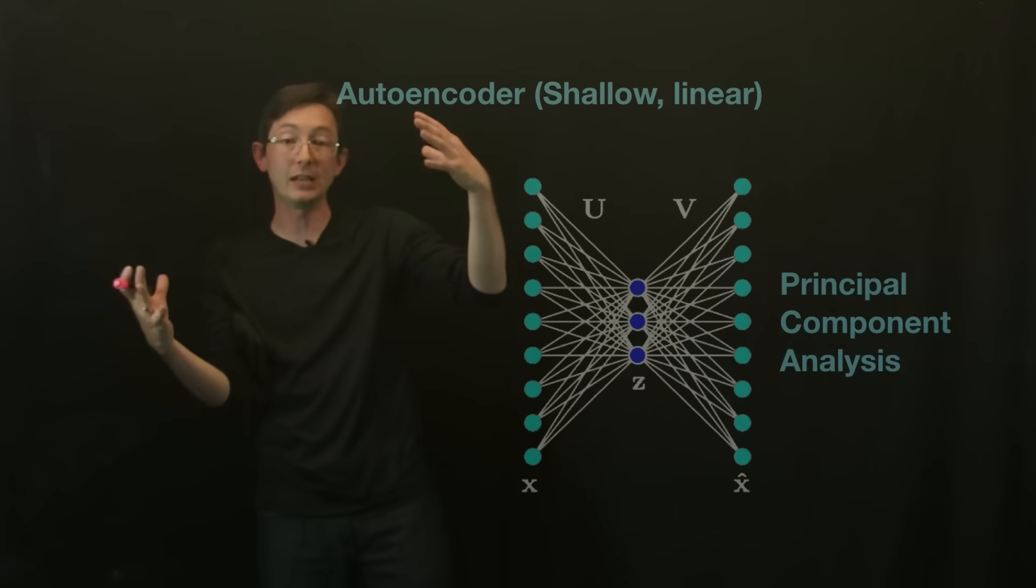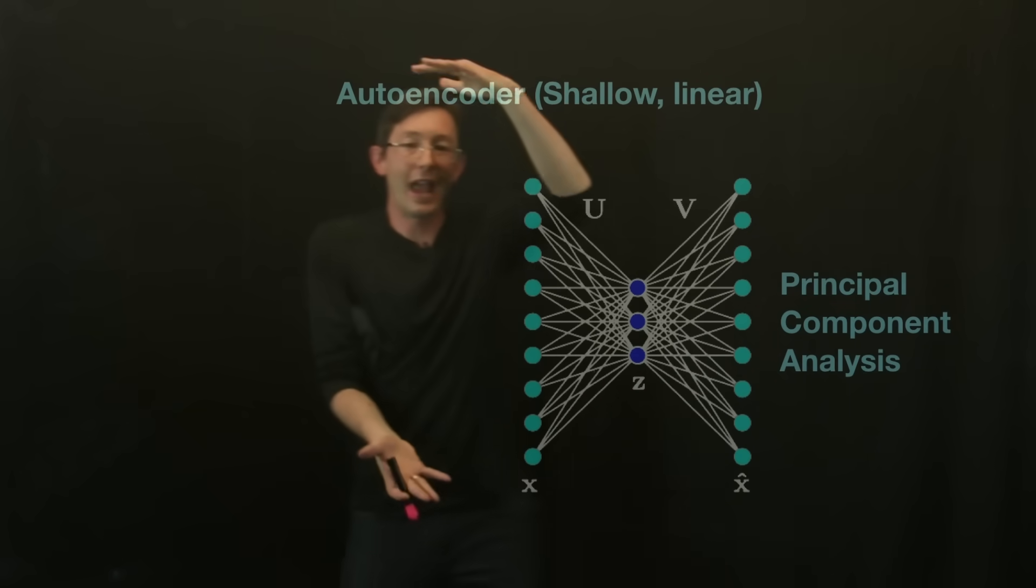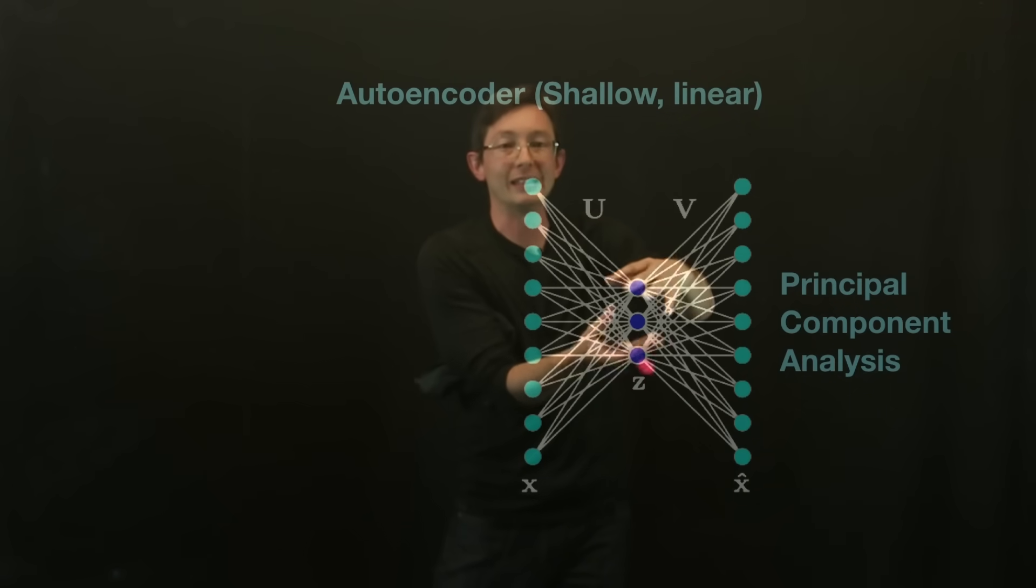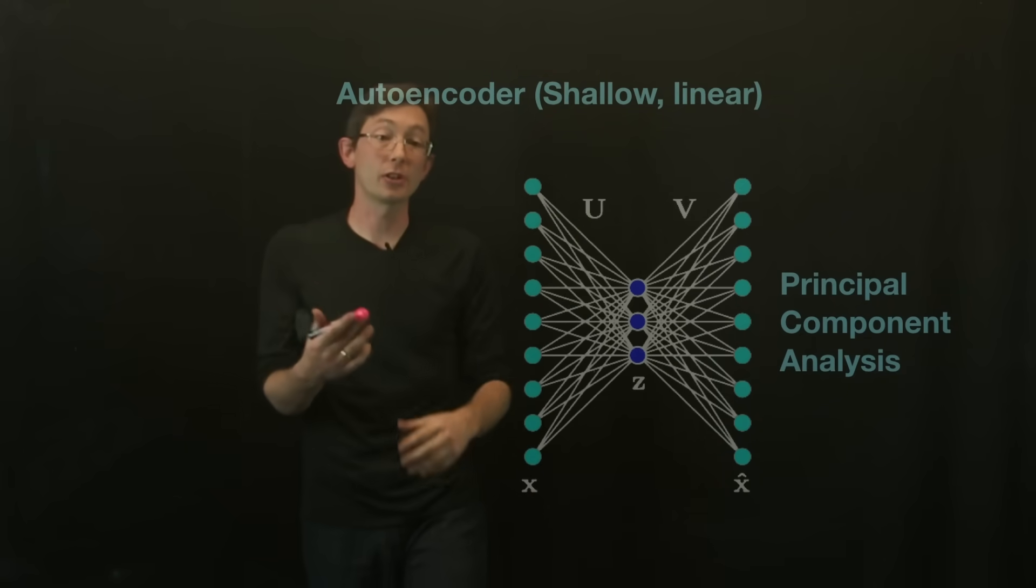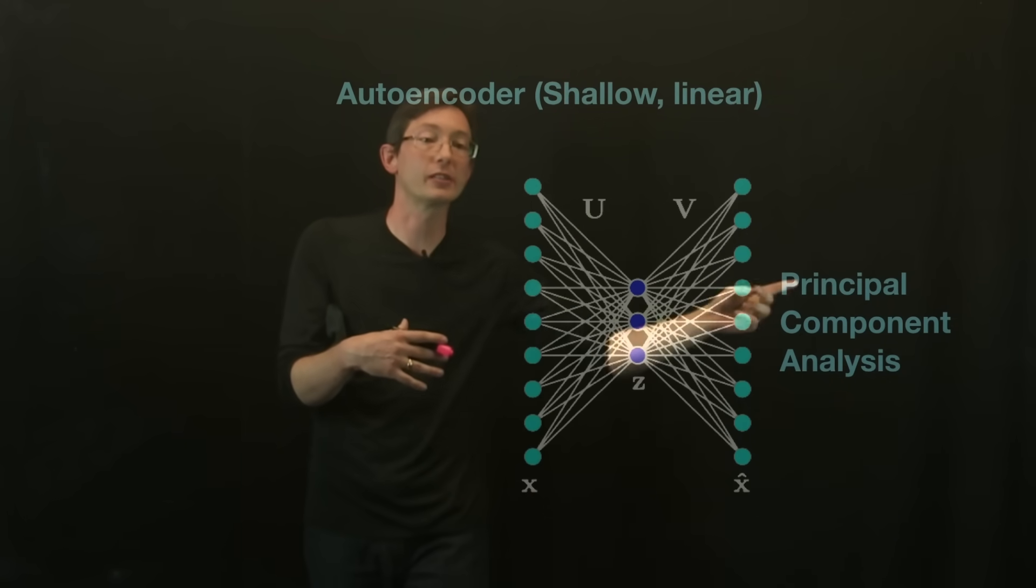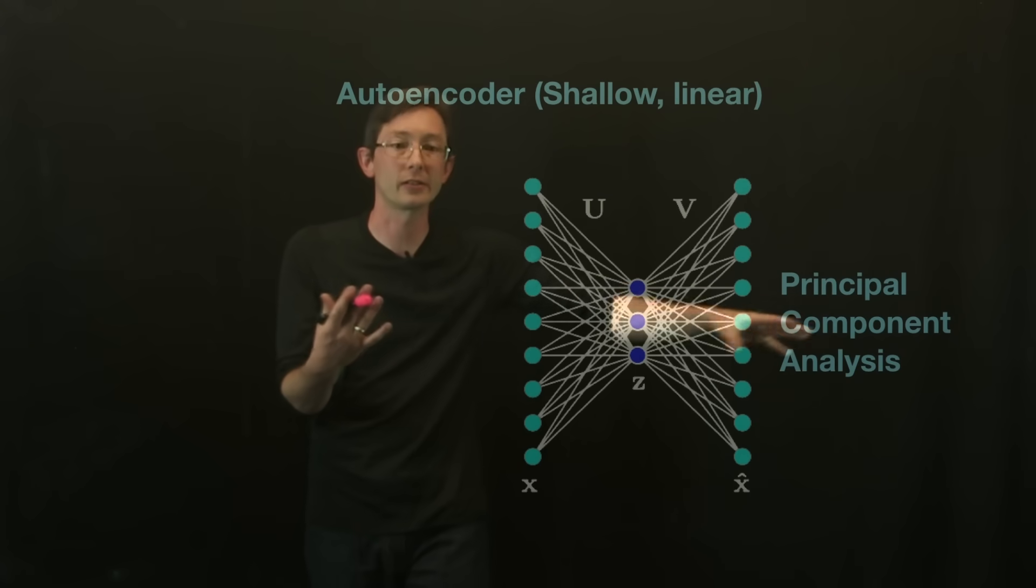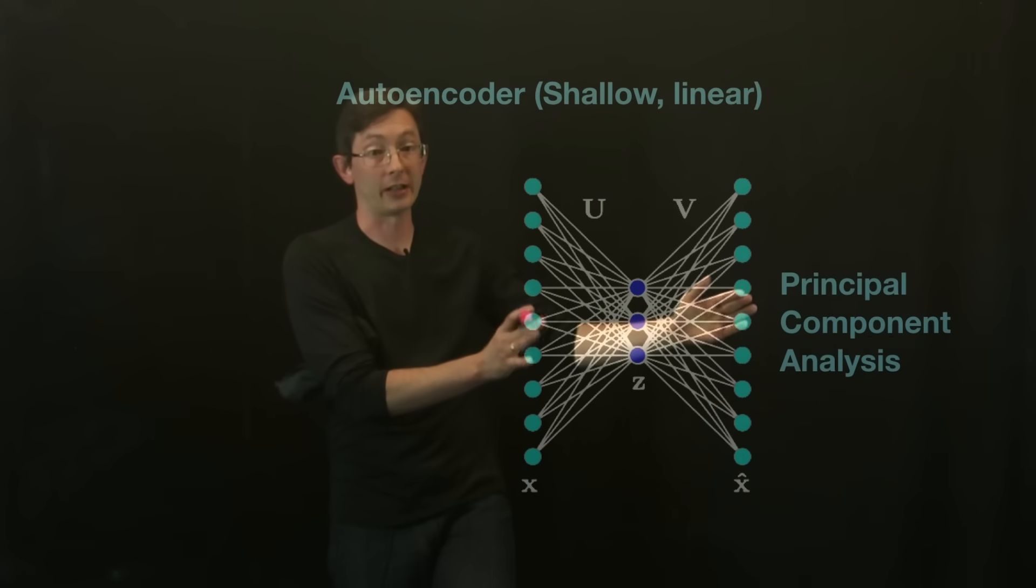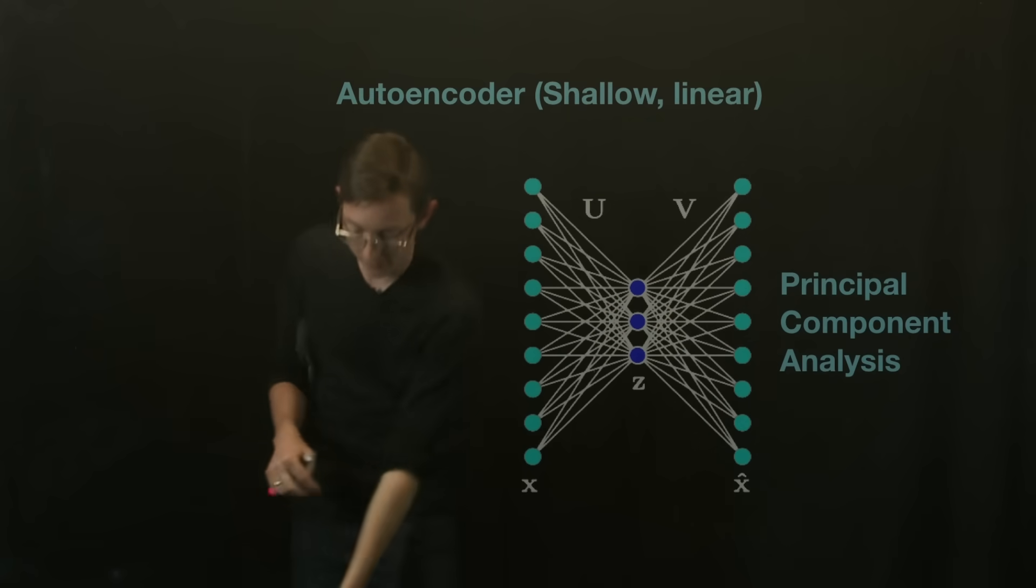Researchers showed a long time ago that you could reconstruct the famous principal component analysis, which has been around for a hundred years, in this neural network architecture, this shallow linear autoencoder network.